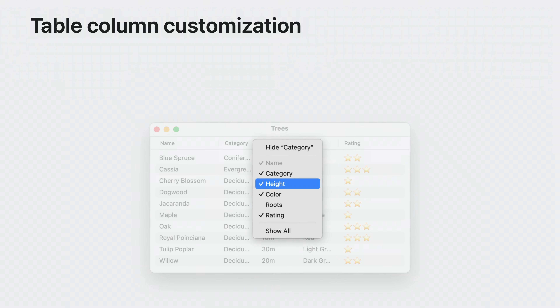Adopt the new delegate method, tableViewUserCanChangeVisibilityOf, to specify which columns the user can hide, and AppKit will handle the rest, including localizing the menu and restoring hidden column state on relaunch.